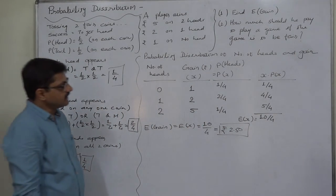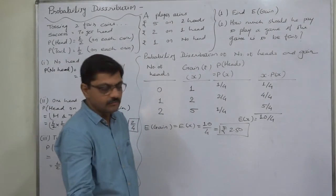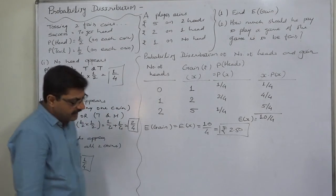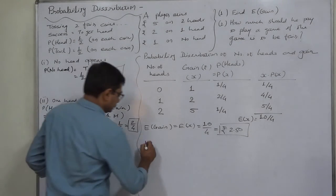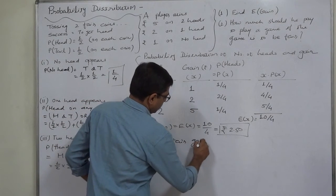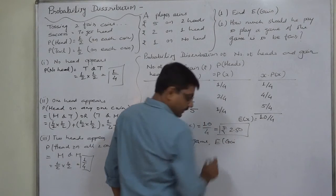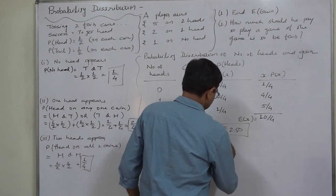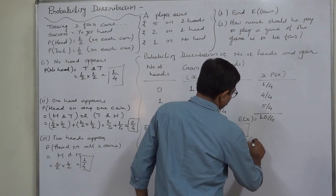The second question is: how much should he pay to play the game one time if the game is to be fair? For the game to be fair, the net expected gain should be zero.